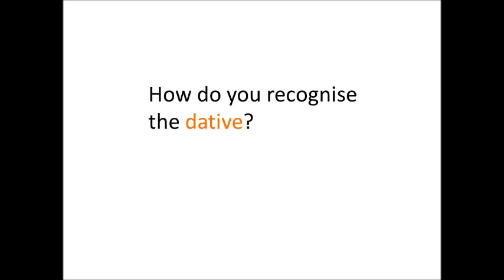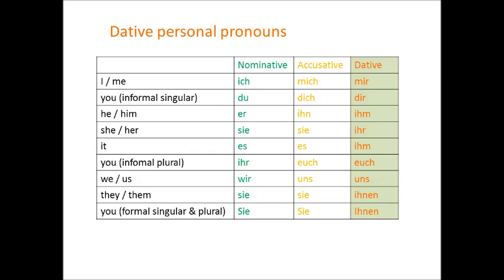So, how do you recognise the dative? Well, one key thing it changes is personal pronouns. All of these are different from the nominative form, and most of them are also different from the accusative form. So you get mir, meaning me; dir, meaning you informal singular; ihm, meaning him or it, covering both masculine and neuter nouns; ihr, meaning her or it, covering just feminine nouns; euch, meaning you informal plural; uns, meaning us; and ihnen, meaning them when written with a lowercase i, and meaning you formal singular and plural when written with a capital letter.